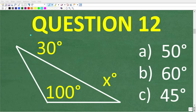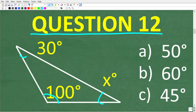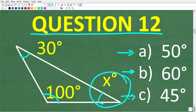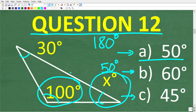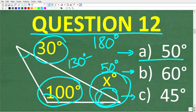Question twelve: given a triangle where one angle is 100 degrees and another is 30 degrees, what is the third angle x? Is it A: 50 degrees, B: 60 degrees, or C: 45 degrees? The correct answer is A, 50 degrees. The sum of angles in any triangle is always 180 degrees. 100 plus 30 is 130, and 180 minus 130 equals 50 degrees.